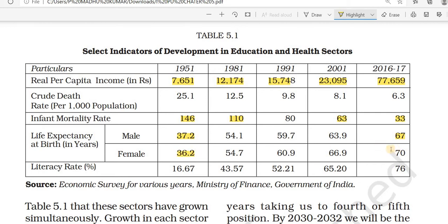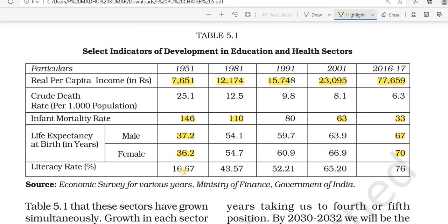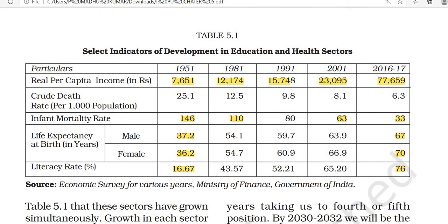By 2016-17, male life expectancy increased to 67 years and female life expectancy increased to 70 years. This increase in life expectancy shows that our medical facilities and health opportunities have improved. The literacy rate in 1951 was only 16.67%, meaning only 16.67% of people were literate at that time.